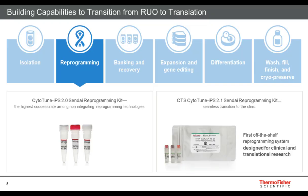Let's talk about the generation and expansion of iPSCs. One important thing when transitioning from bench to clinical work is to make sure you have translatable products. We have the CytoTune iPS 2.0 Sendai Reprogramming Kit, which is useful for research use only (RUO). We utilize the Sendai virus because it's transient — you can eliminate it from the cell after reprogramming; it doesn't integrate. We also have the CTS version to help you take that to the clinic. This is the first off-the-shelf reprogramming system designed for clinical and translational research.